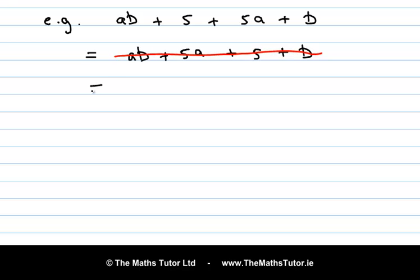So let's try a different arrangement. So ab plus b plus 5a plus 5. We have a common factor here and we have a common factor here.